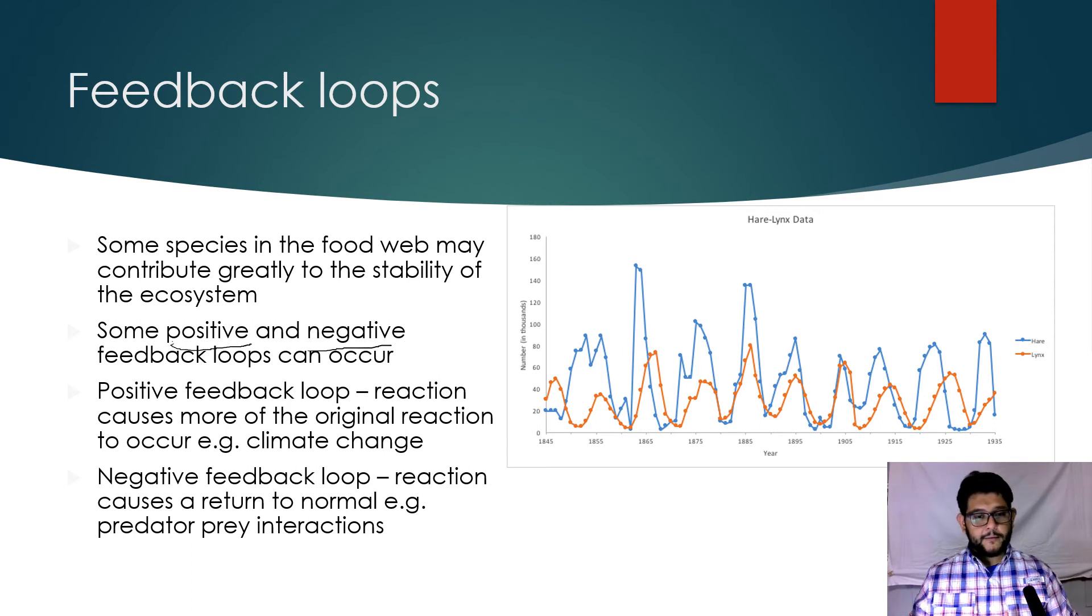A negative feedback loop is something that would return to normal - think of it like predator-prey interactions. As you can see the hare is the blue line, the lynx is the red line. Whenever you see a rise in the hare population, what happens shortly after? Well the lynx population goes up too. You see the blue line went up first, then the red line went up.